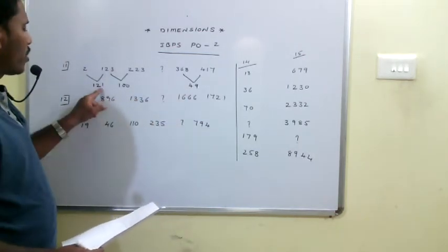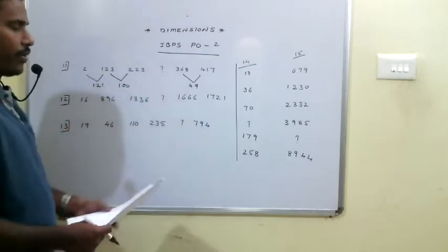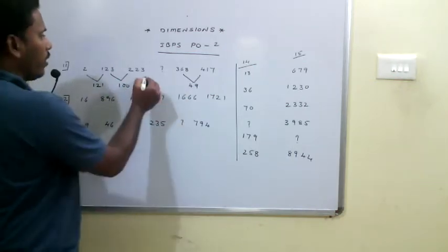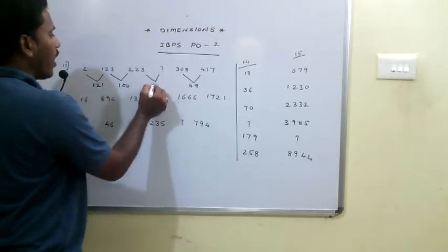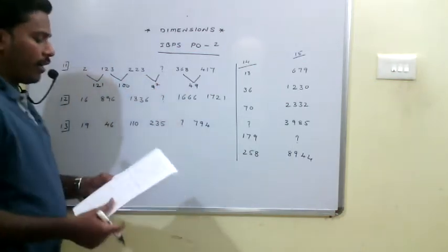So this is 11 squared, 10 squared, this is 7 squared. This gap must be 985.